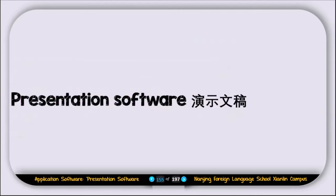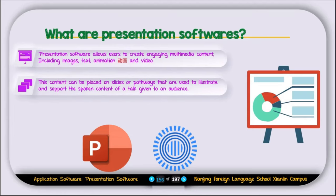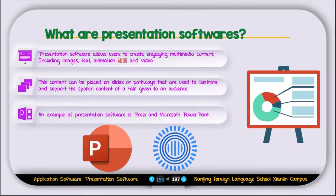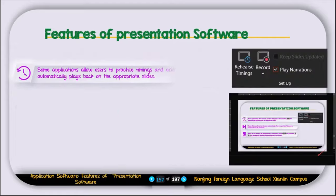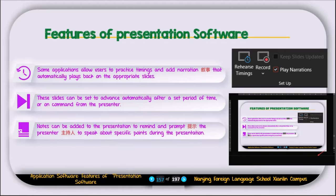The next type of application software is presentation software. Presentation software is used to create engaging multimedia content including images, text, animation, and videos. This content is placed on slides that illustrate and support the spoken content of a talk given to an audience. Examples are Microsoft PowerPoint and Prezi. Some applications allow users to practice timing and add narration that automatically plays on the appropriate slides. Slides can advance automatically after a set time or on command, and notes can be added to remind and prompt the presenter.